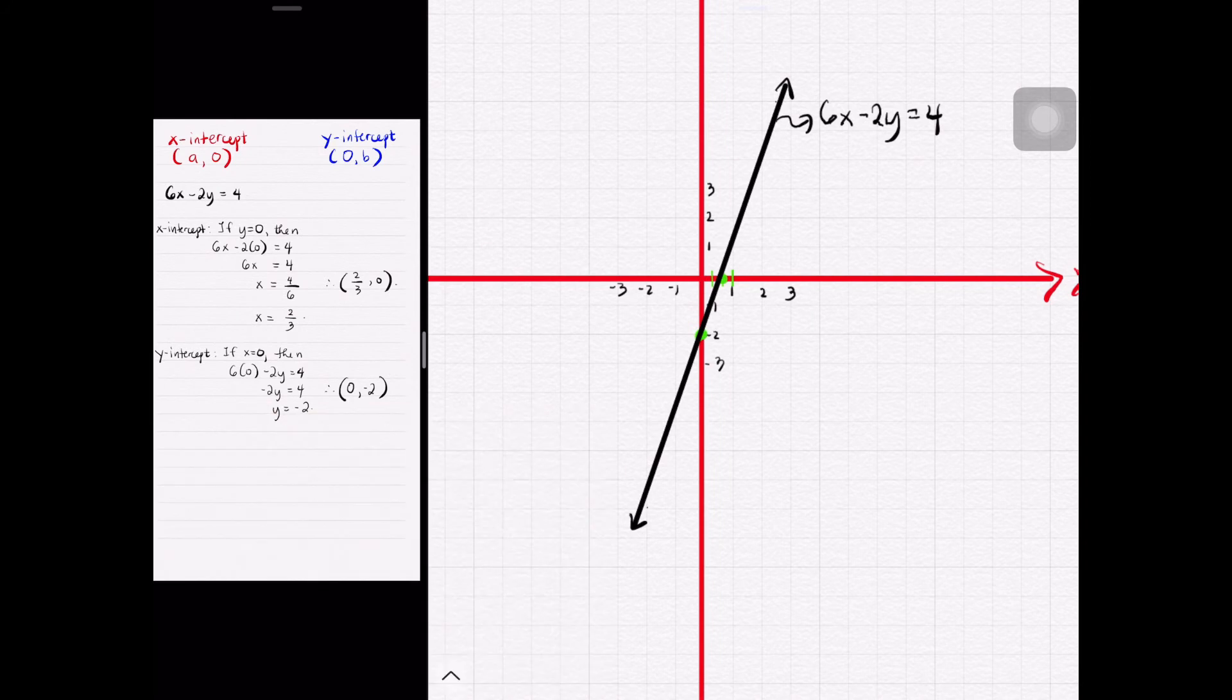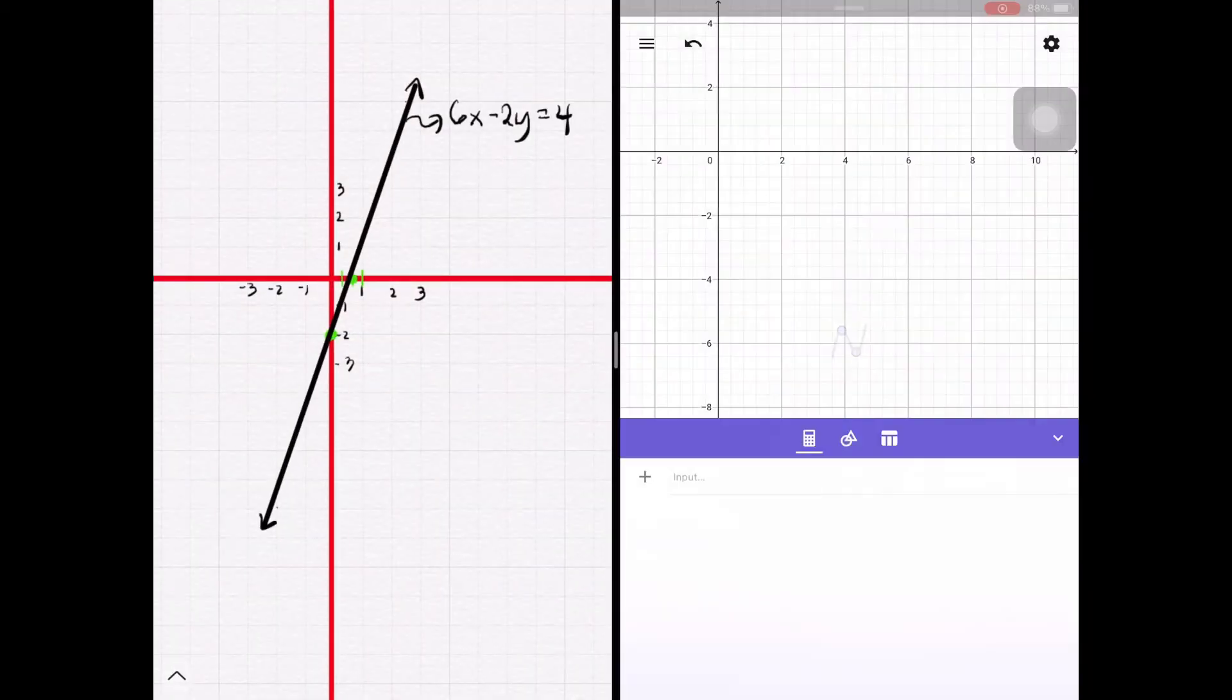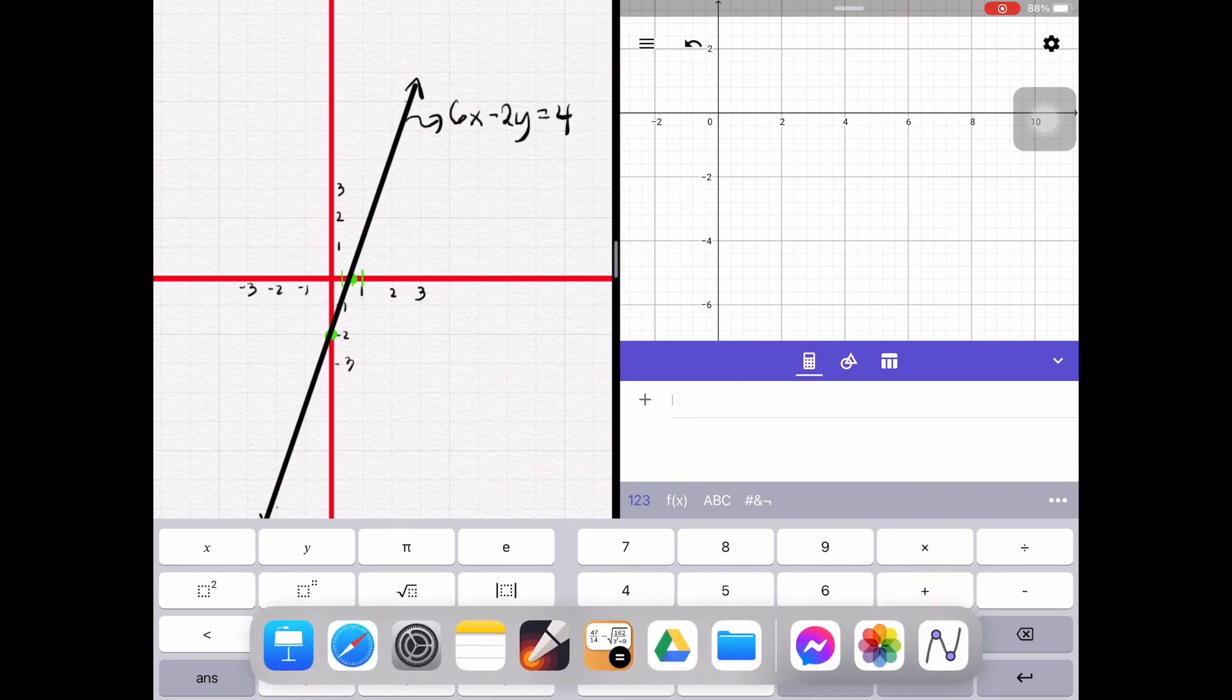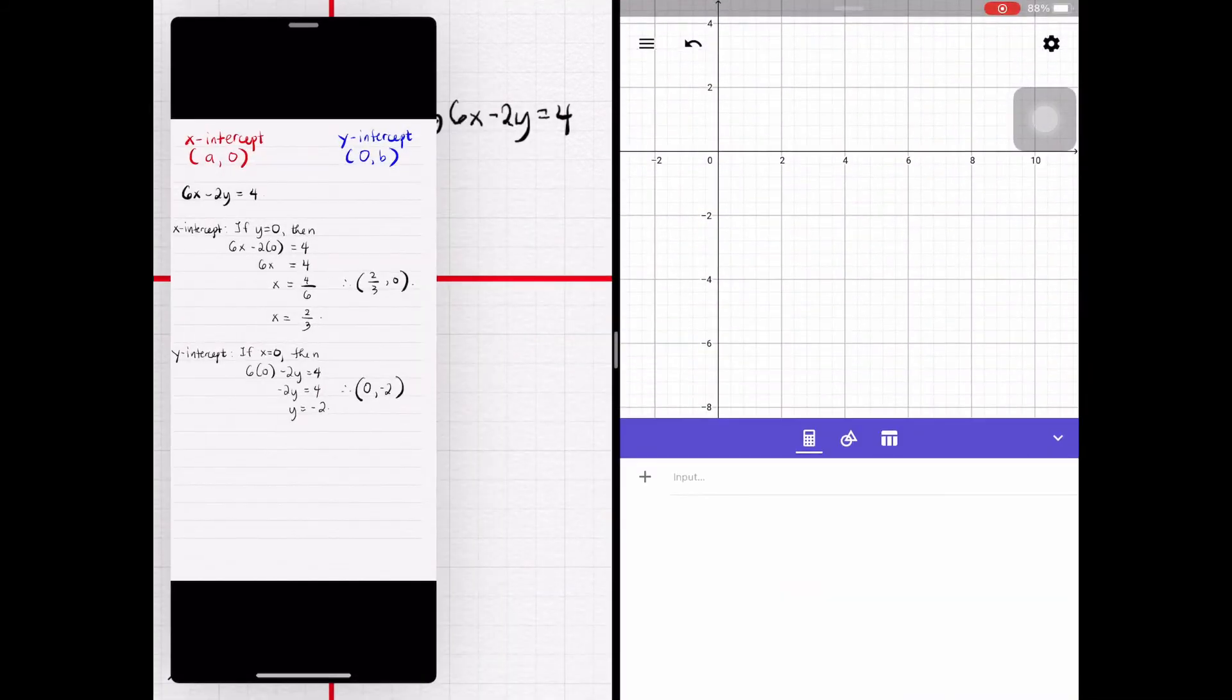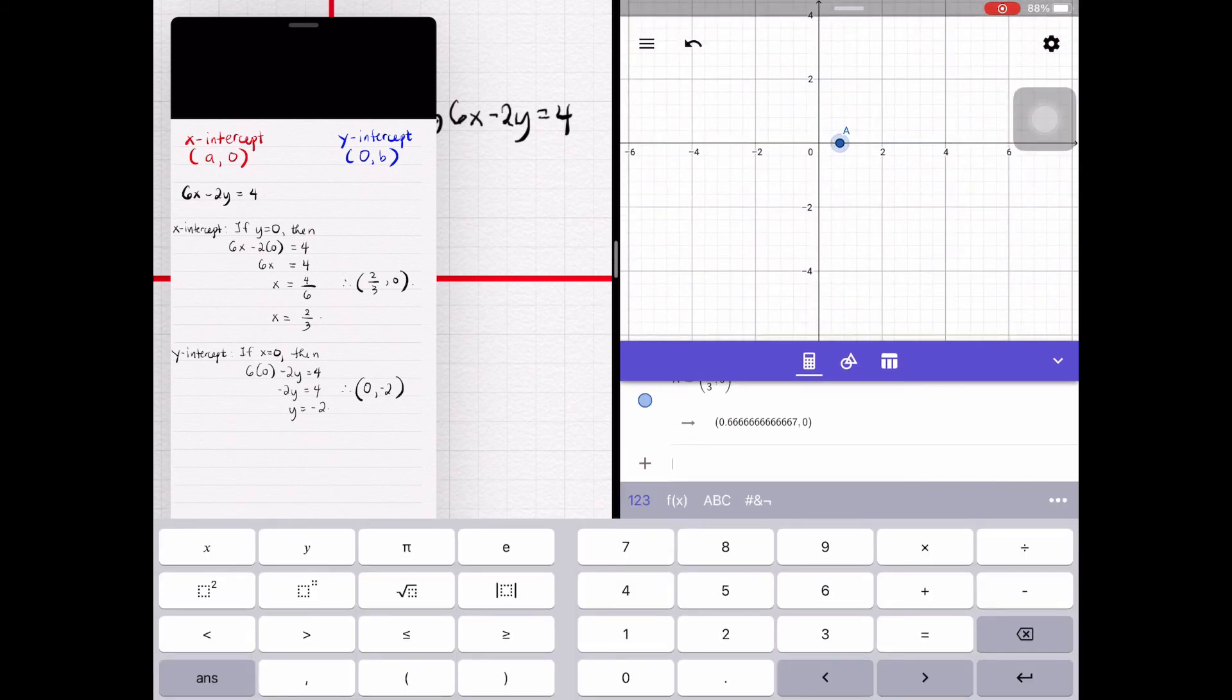Let's try to compare the graph that we did manually to a graph produced by a graphing calculator. Let's input first the intercepts we solved, starting with the x-intercept which is (2/3, 0), then the y-intercept which is (0, -2).